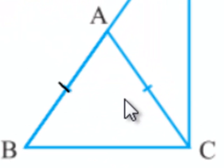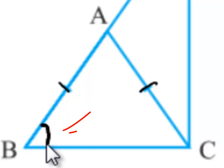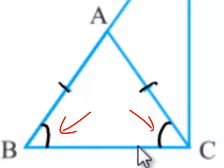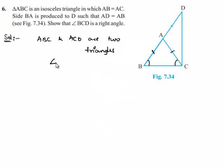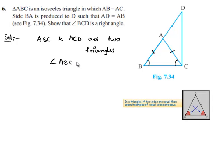In triangle ABC, AB is equal to AC, so we can say that angle B will be equal to angle C, as in a triangle, angles opposite to equal sides are equal. That is, angle ABC is equal to angle ACB.